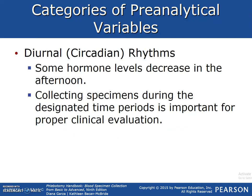Circadian rhythms: some hormonal levels decrease in the afternoon. An example of this would be a cortisol AM level, which needs to be collected between 8 and 9 AM. Collecting the specimen during the designated time period is important for proper clinical evaluation.